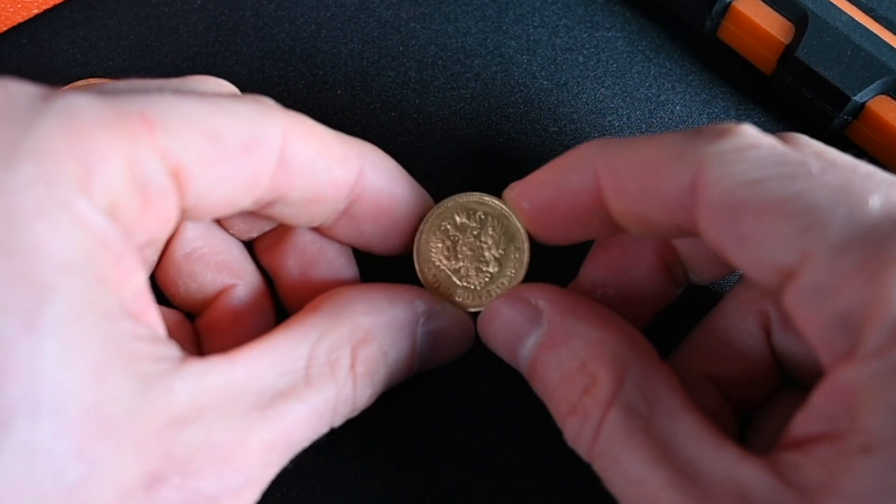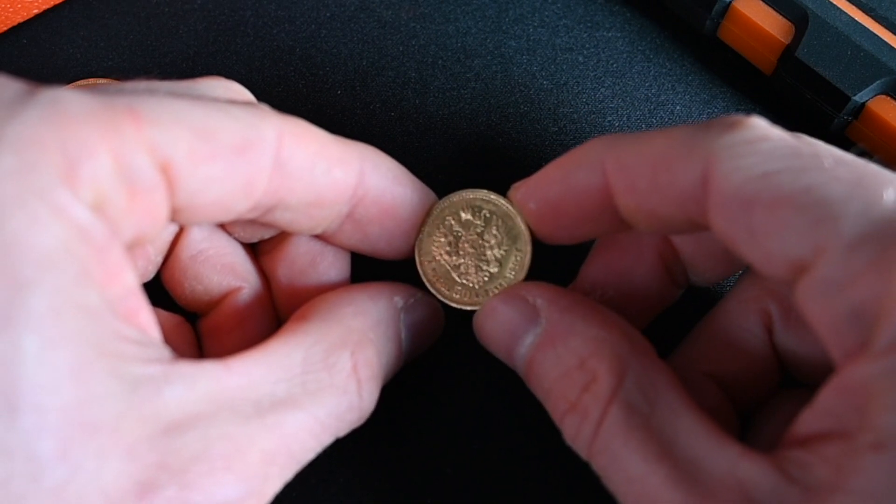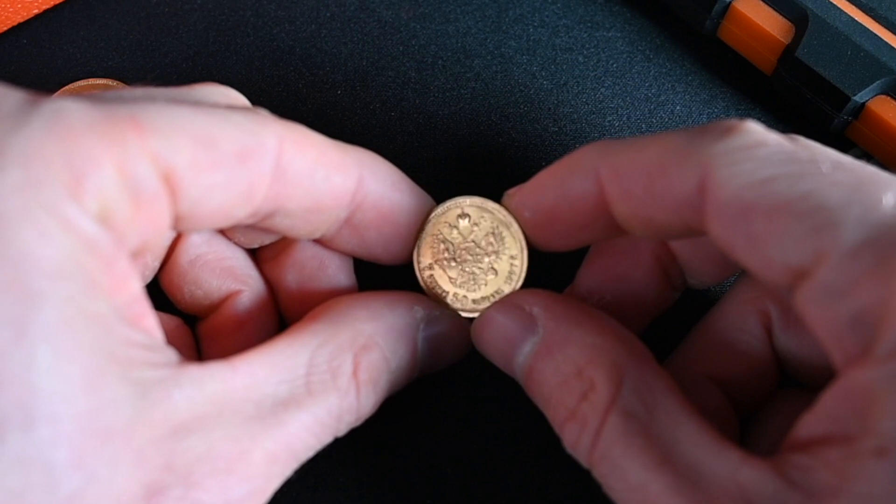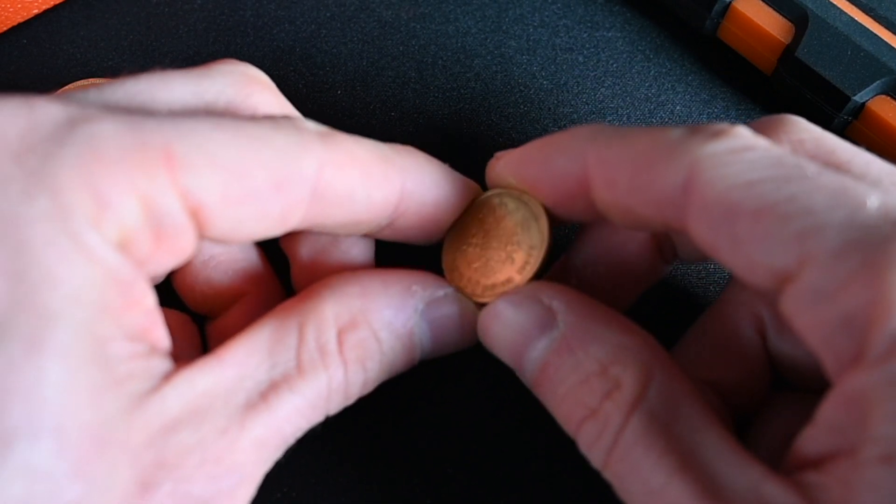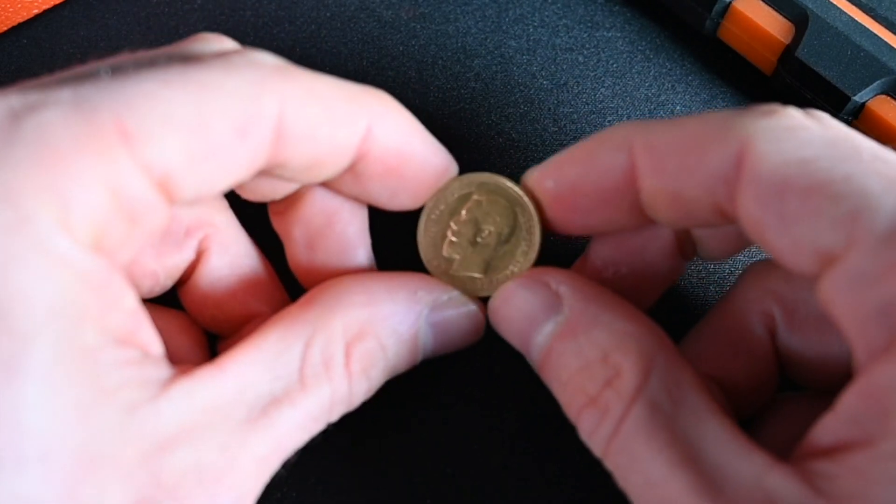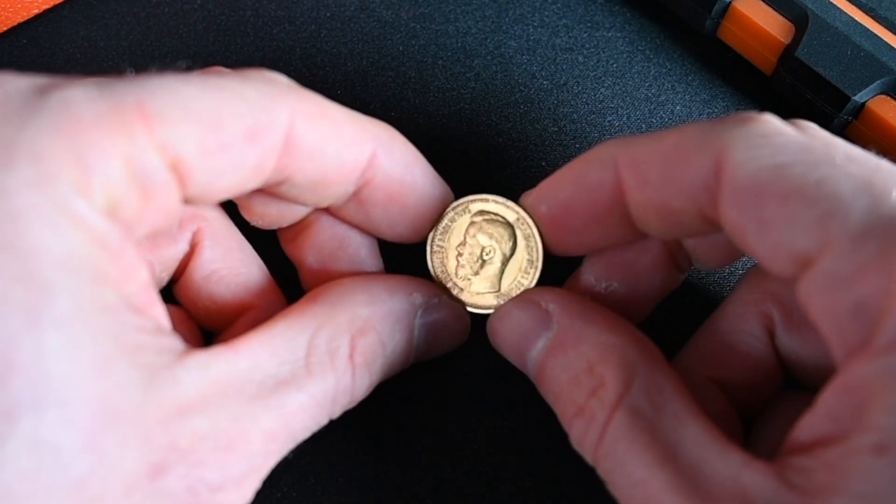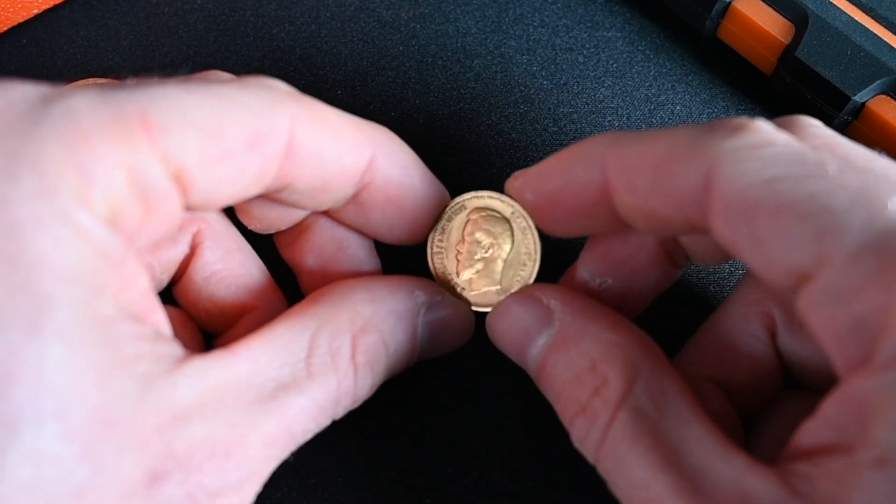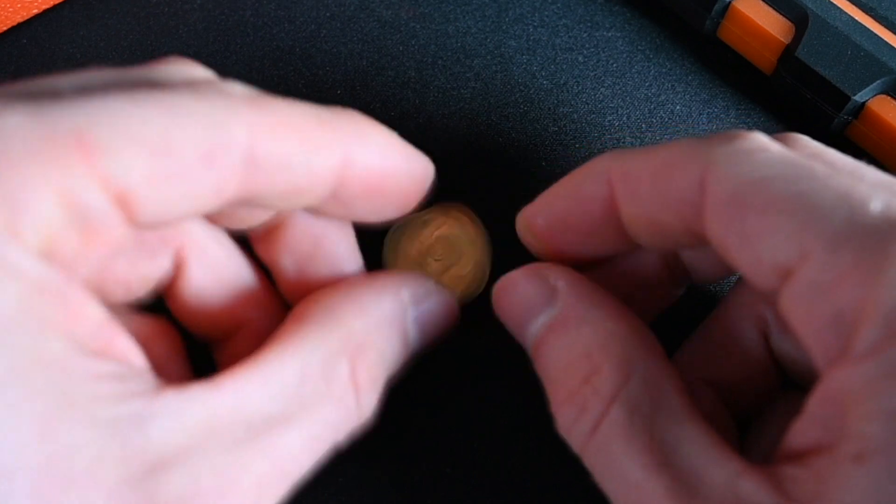That would be like having a 75 cent piece, or more like a $7.50 piece in the US. So this is a coin that weighs 6.45 grams. It's composed of 900 gold, so 90% gold. And the gold value alone is about $340 in today's melt prices.